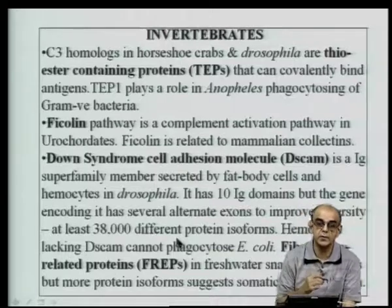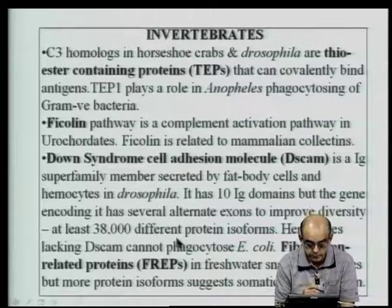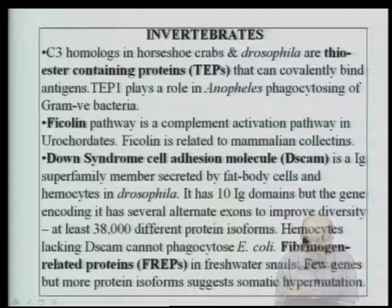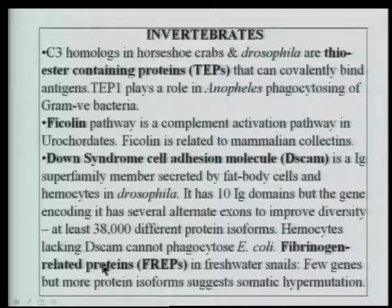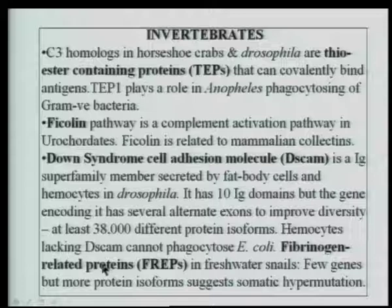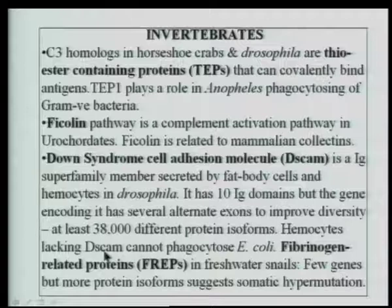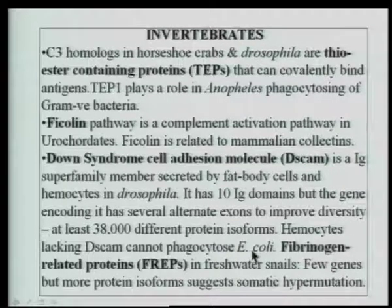Hemocytes lacking this DSCAM molecule — similar to lacking immunoglobulins or having IgG or IgA deficiency — cannot phagocytose E. coli. So there is a kind of relationship. Similar molecules, such as FREPs or fibrinogen-related proteins, are found in freshwater snails, where diversification happens not because of alternative exons but because of somatic hypermutation — found in higher mammals when IgG matures to form molecules with higher affinity.